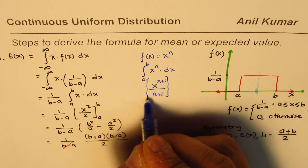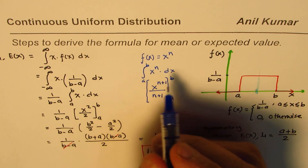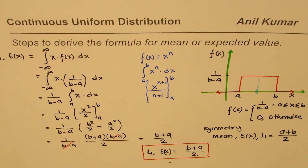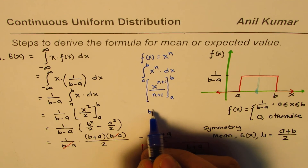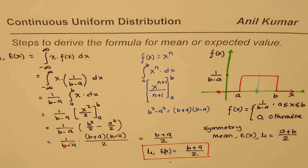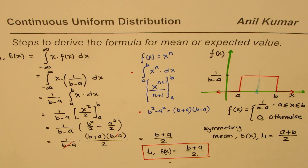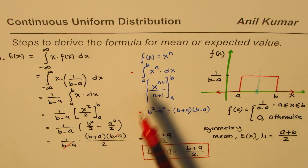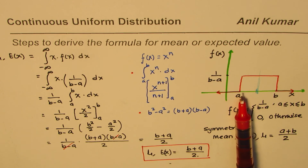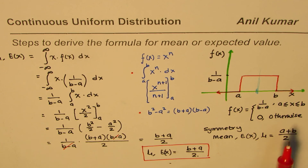To evaluate the definite integral, we substitute b for x to get b to the power of n plus 1, then subtract the result with a substituted for x. We used two formulas: the power function integral formula and the difference of squares factoring. It makes intuitive sense that the mean should be midway between a and b, since the uniform distribution is always constant — giving us the average of the two endpoints.